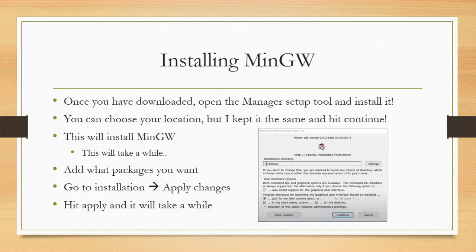Once you have that downloaded, you can open the Manager Setup tool. Hit Install and choose where you want to put it. Hit Continue, and this will take a little bit to install MinGW. Once you have that downloaded, you can move on to selecting what packages you want to use. There's a huge list that will vary person to person, whether you want C++ or Fortran, but go ahead and choose what you'd like. Go to Installation and apply those changes, and all those packages will be downloaded. This might take a little bit of time as well.